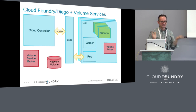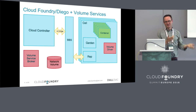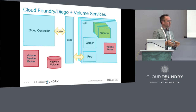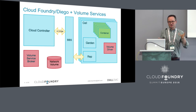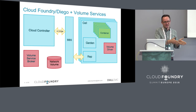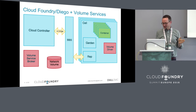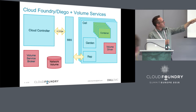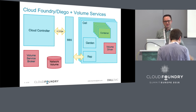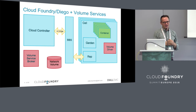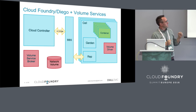To introduce volume services into this picture, we have a few pieces. We have the actual volume — whatever it is, could be NFS or CIFS or some other network-attached storage. We have a service broker, which just like any other Cloud Foundry service broker is responsible for creating or identifying the resource and translating that into information passed to the Cloud Controller. And the final piece is the volume driver, deployed into the Diego cell — so if you have 12 cells, you'll have 12 copies of your volume driver. That piece is responsible for taking the information from the Cloud Controller and using it to mount the volume into the Diego cell.